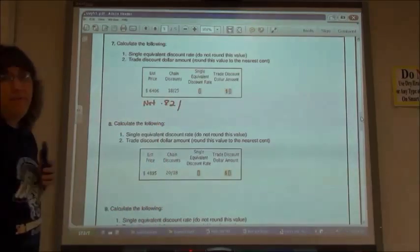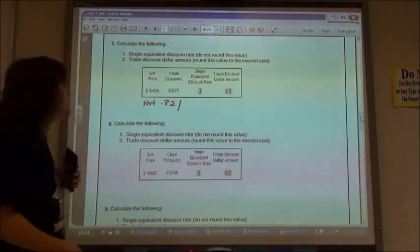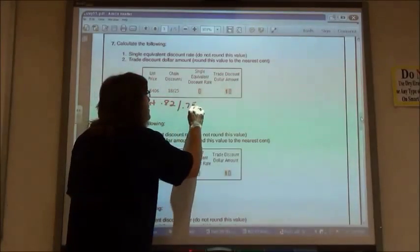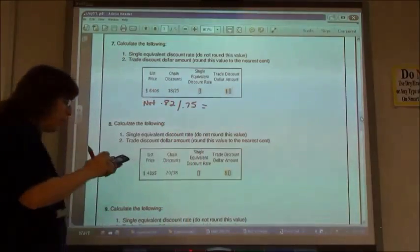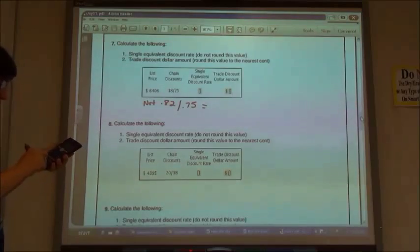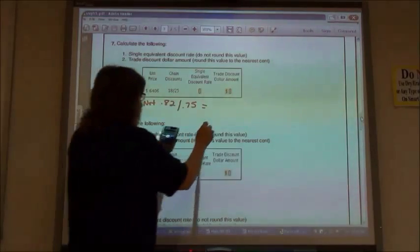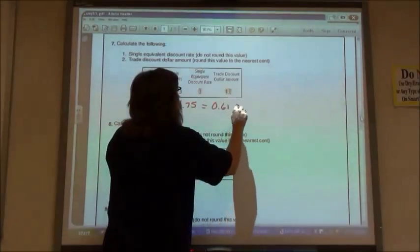If I have a 25% discount, 100 minus 25 would give me 75% for a net. And so if I multiply that, 0.82 times 0.75 gives me 0.615.